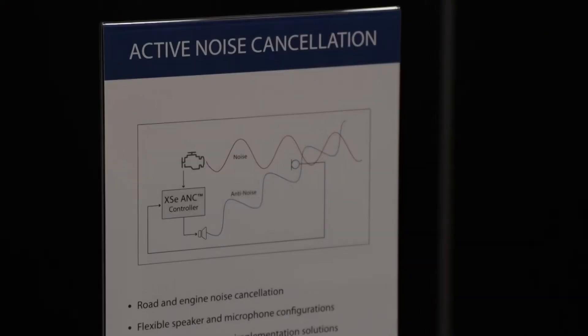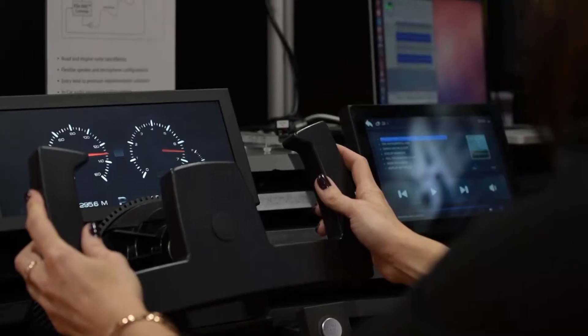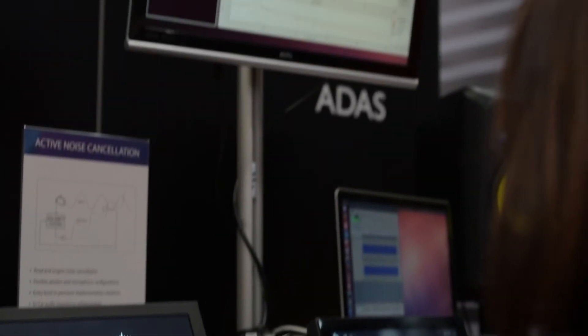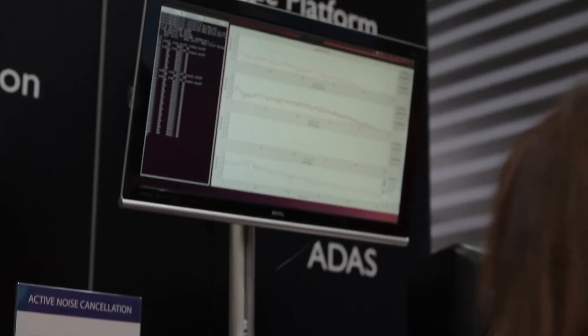The benefit of ANC is noise cancellation for vehicles. You have this undesired noise coming from the engine and the road and you'd like to cancel that out in some way. The way our system works is it picks up the noise and feeds it into our DSP which runs our ANC algorithm. The ANC algorithm then generates anti-noise that creates these passenger quiet zones in the vehicle.